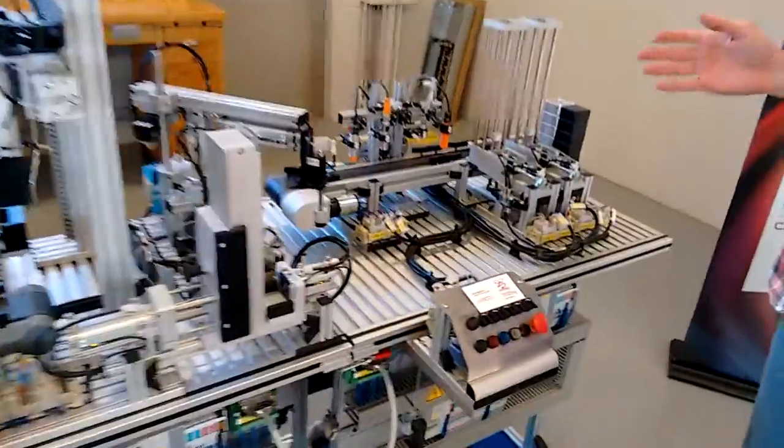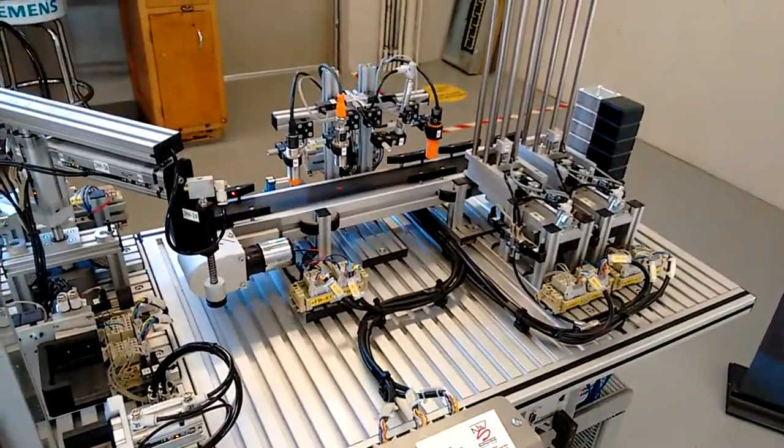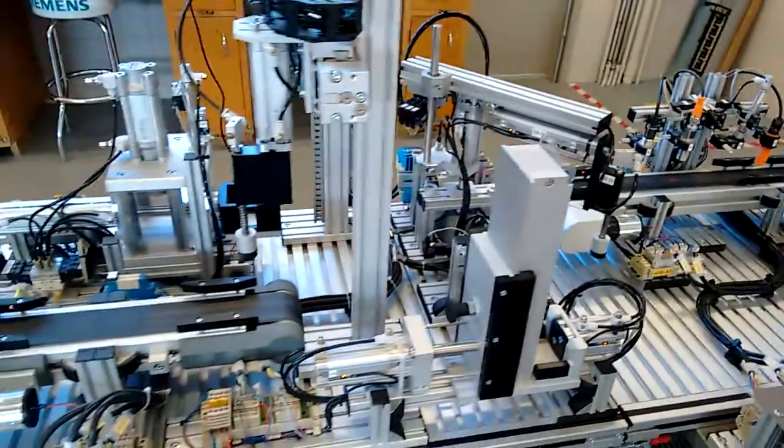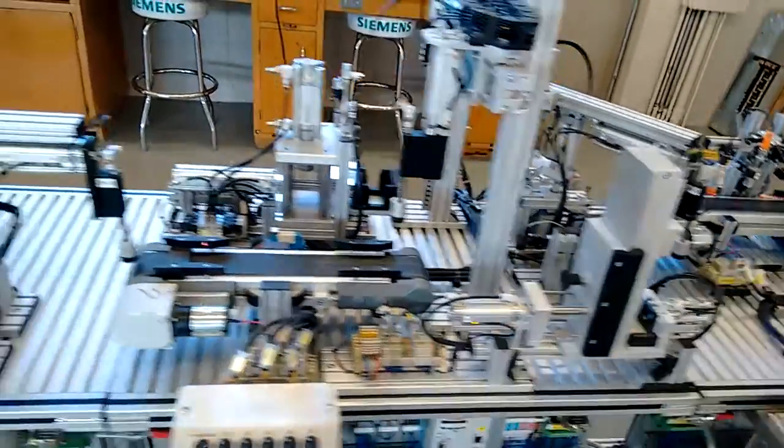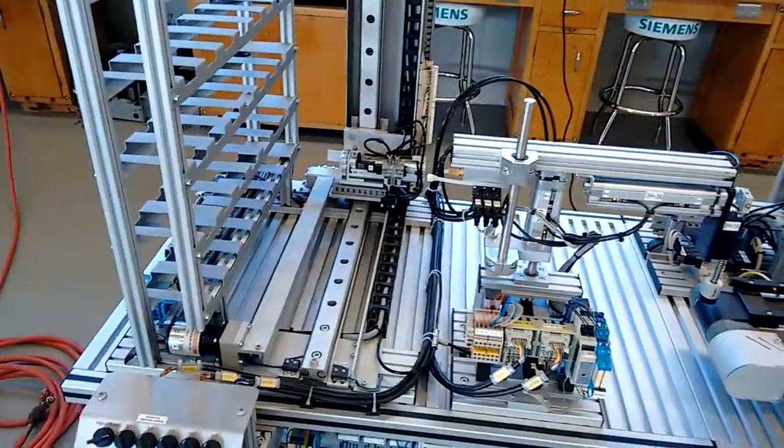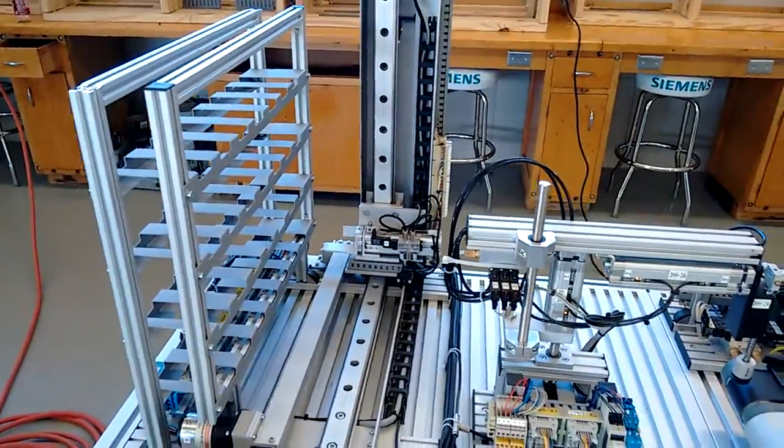Station 1 here sorts out the usable and non-usable materials. Station 2 takes the usable materials, puts them together and makes a cube. Station 3 takes the finished cube and stacks it on the shelf. I'll just let you watch it run here.